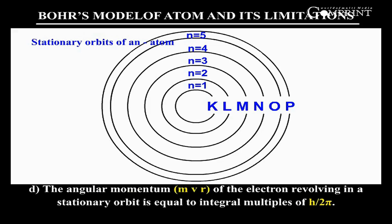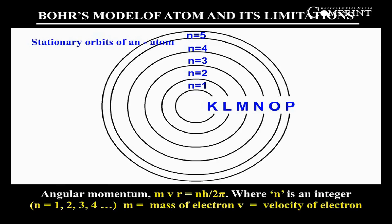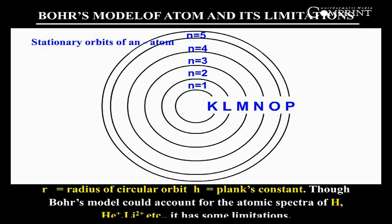The angular momentum mvr of the electron revolving in a stationary orbit is equal to integral multiples of h by 2π. Angular momentum mvr equals nh by 2π, where n is an integer (n = 1, 2, 3, 4, and so on), m is the mass of the electron, v is the velocity of electron, r is the radius of circular orbit, and h is Planck's constant.